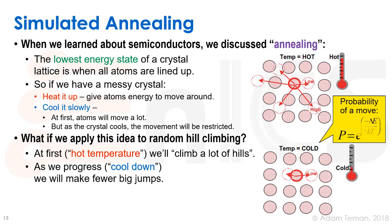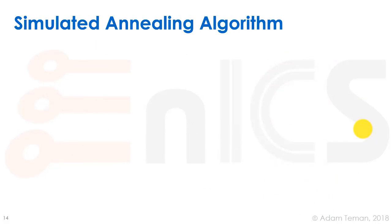The higher the energy is, the higher the probability is that we will take a move. The lower the energy is, the colder the temperature is, the lower the probability we take a move is, so we make fewer big jumps. This is the idea of simulated annealing. Let's see it in the algorithm that does it, and then let's see how it works.